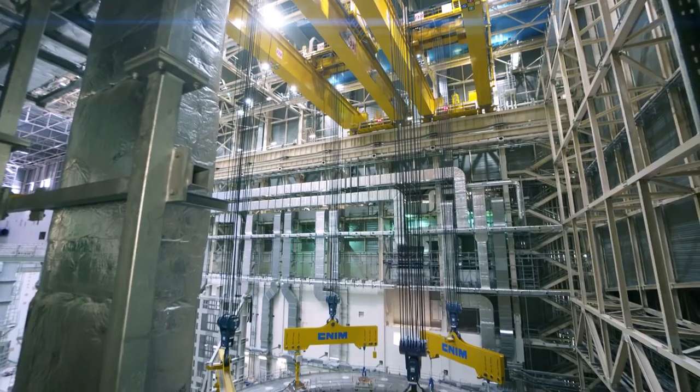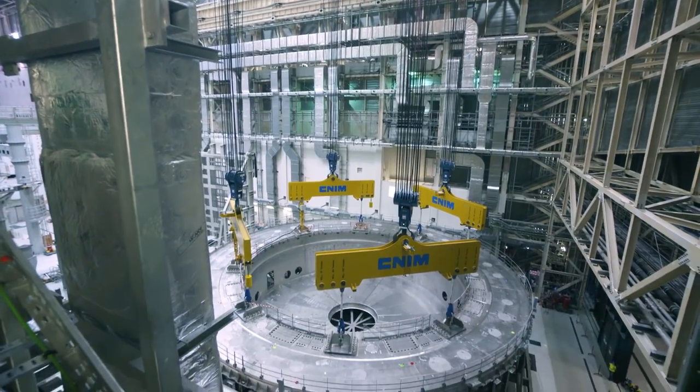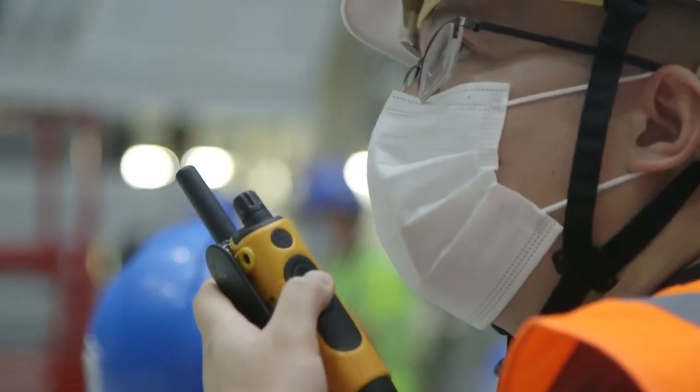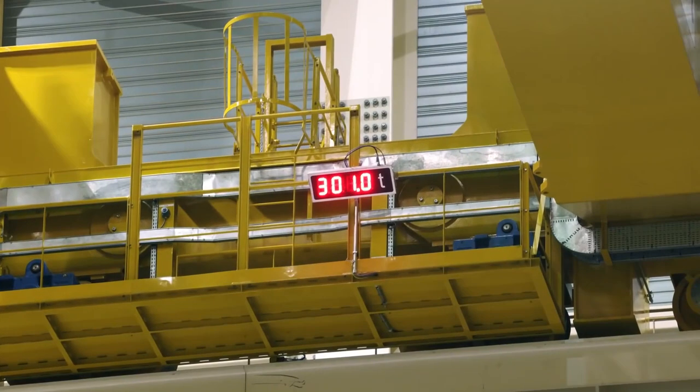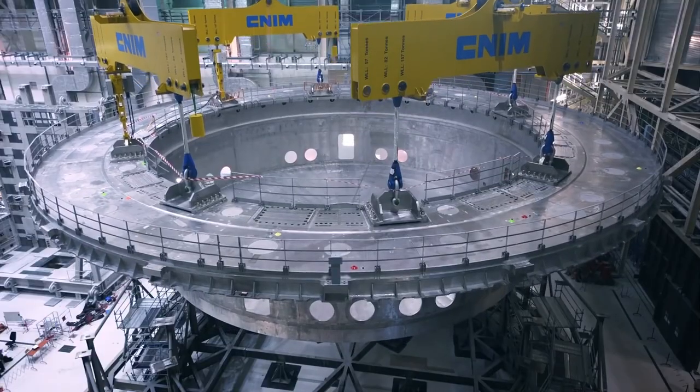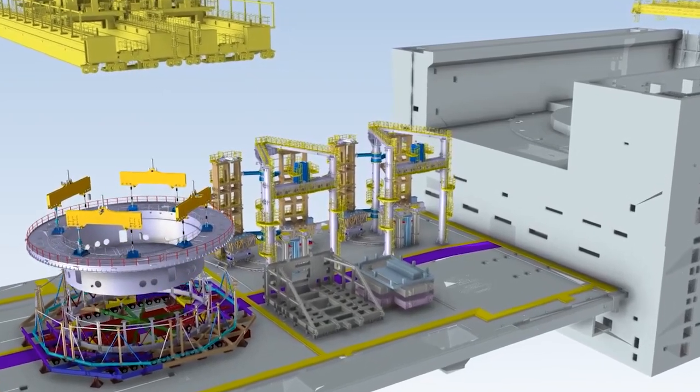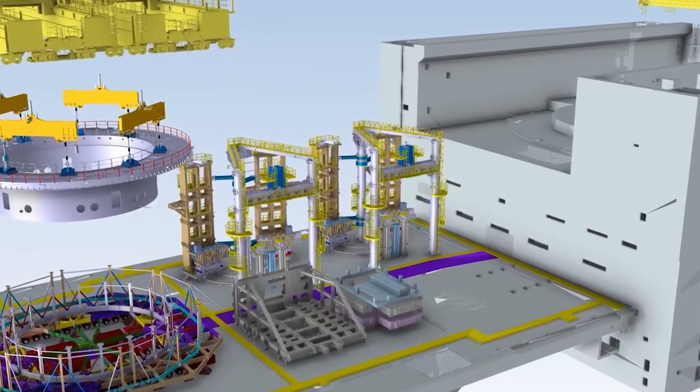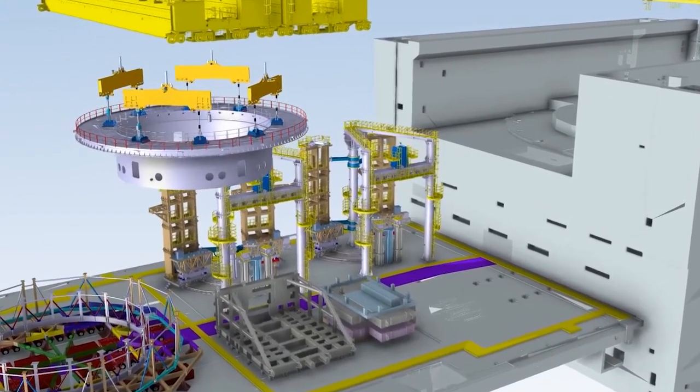Finally, the cryostat will help to keep the environment of the Tokamak cool. It's made out of stainless steel and surrounds the vacuum vessel and the magnets. ITER declares it to be the largest stainless steel vacuum chamber in the world, with a total volume being 16,000 cubic meters and 3,800 metric tons of steel.